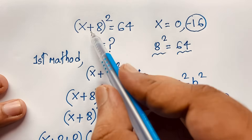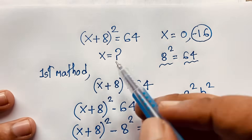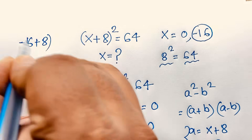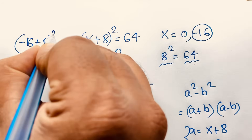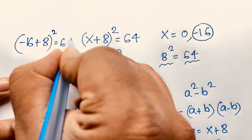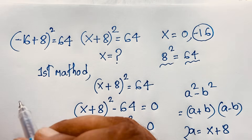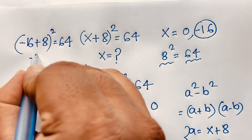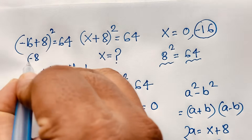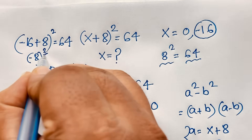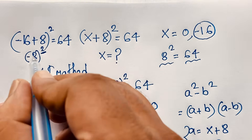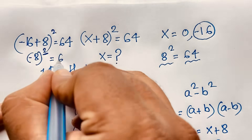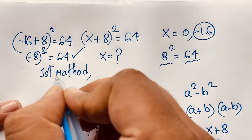Now if x = −16: (−16 + 8)² = (−8)² = 64. Is it 64? Yes, this is 64. Because −16 + 8 = −8, and the bracket power is 2, which is an even number. A negative number raised to an even power is always positive. So it is 64 here.